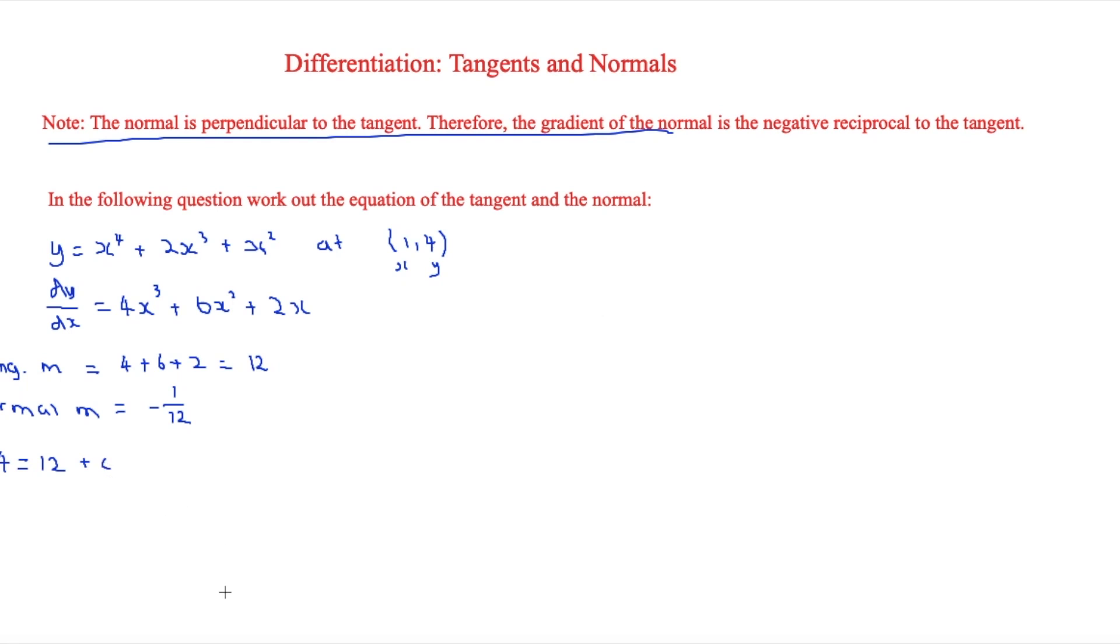So it goes to 4 equals 12 plus c. Therefore, we know that c is going to be minus 8. So therefore, that equation is going to be y equals 12x minus 8.